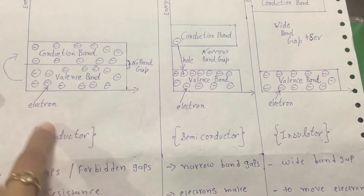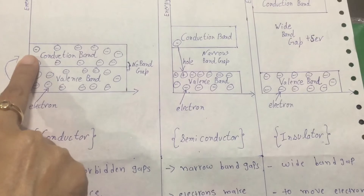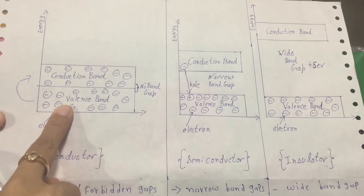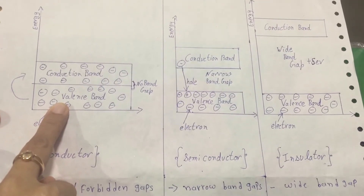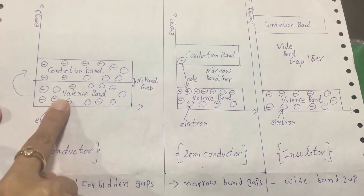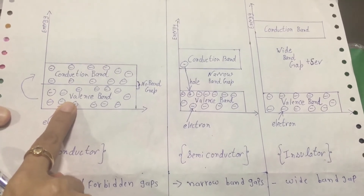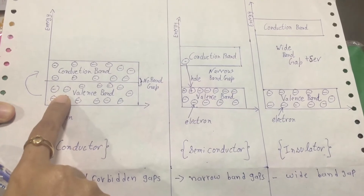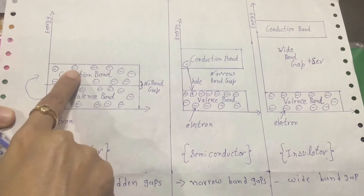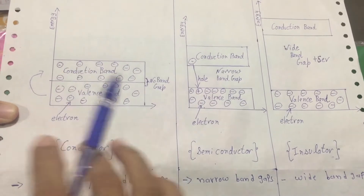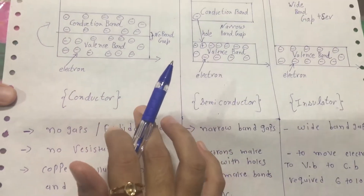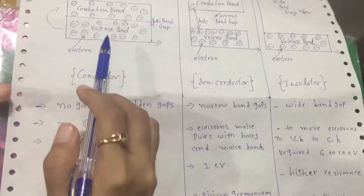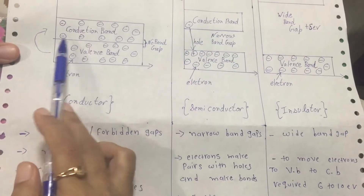This is the energy level diagram of a conductor. This is the valence band and this is the conduction band. The valence band means all negative charges or electrons are already there. After turning on the supply, all electrons of the valence band start to move to the conduction band — that's why it is called a conductor, as it allows all electrons to pass.